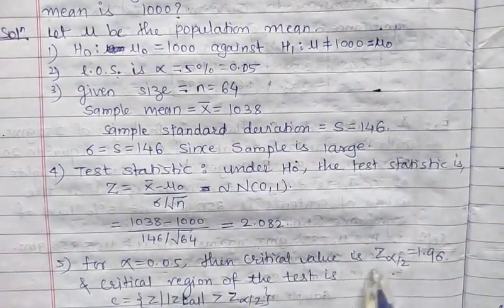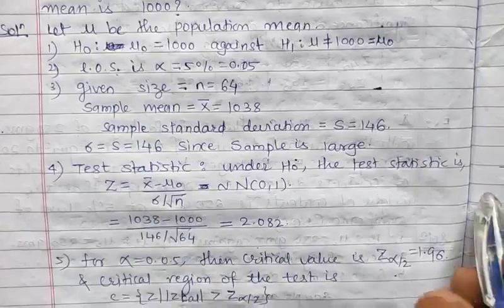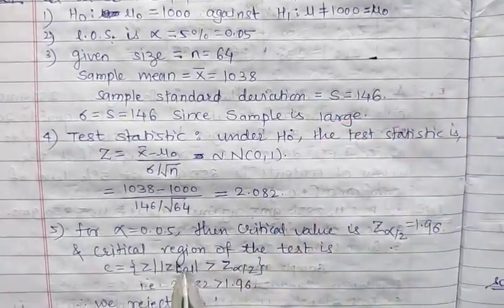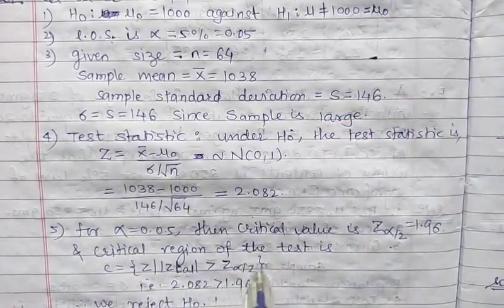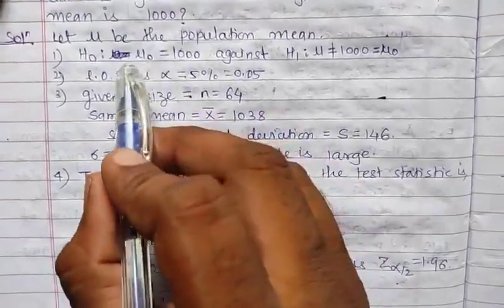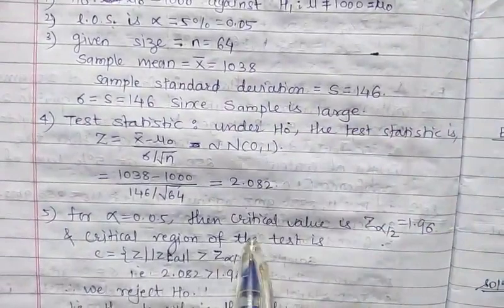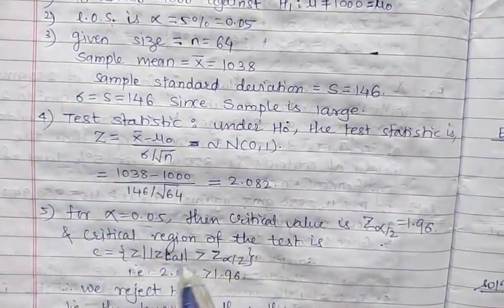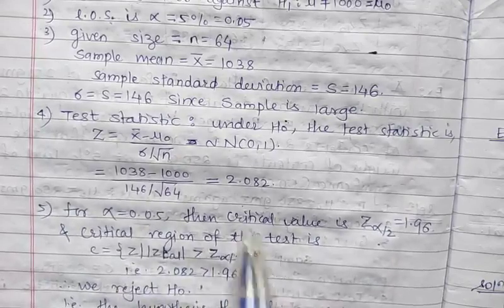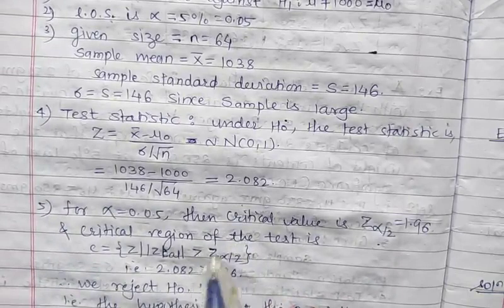The critical region: z_α/2 has value 1.96. The critical region of the test is: if |z_calc| > z_α/2, we reject H₀. H₀ is μ = μ₀ = 1000. If this condition is satisfied, we reject H₀. If this condition is not satisfied, we accept H₀.